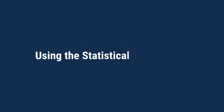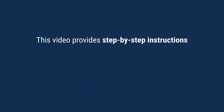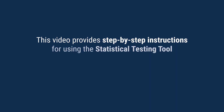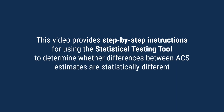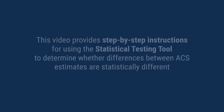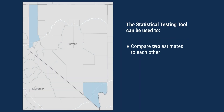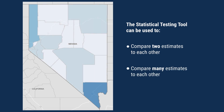The U.S. Census Bureau developed a statistical testing tool to allow data users to carry out statistical testing with the American Community Survey, or ACS, and other Census Bureau surveys. This video provides step-by-step instructions for using the tool to determine whether differences between ACS estimates are statistically different. The statistical testing tool can be used to compare two estimates, or many estimates, such as comparing estimates for all counties in a state.